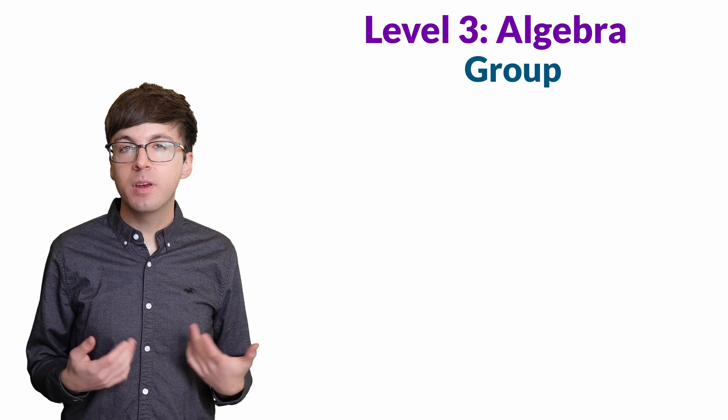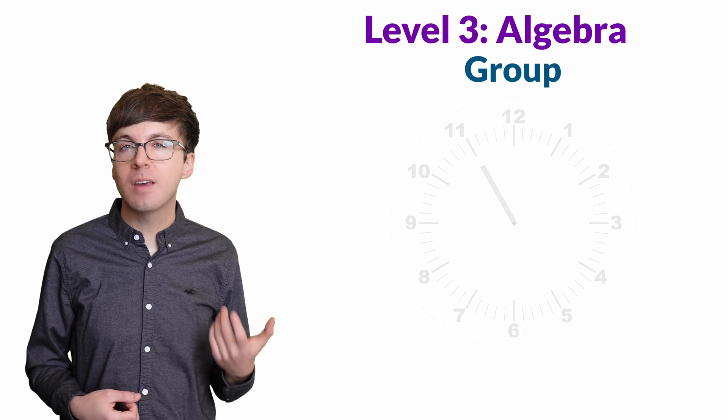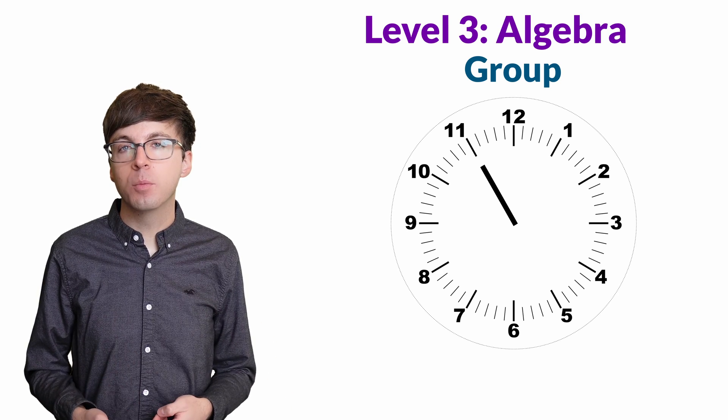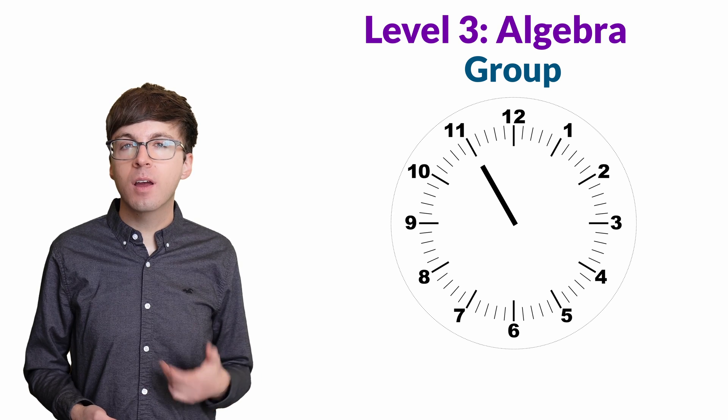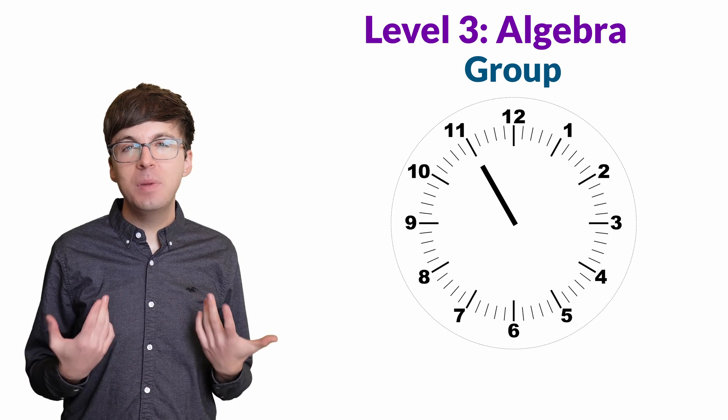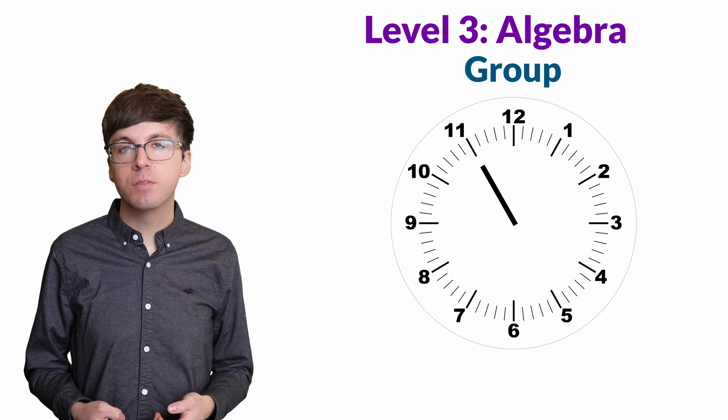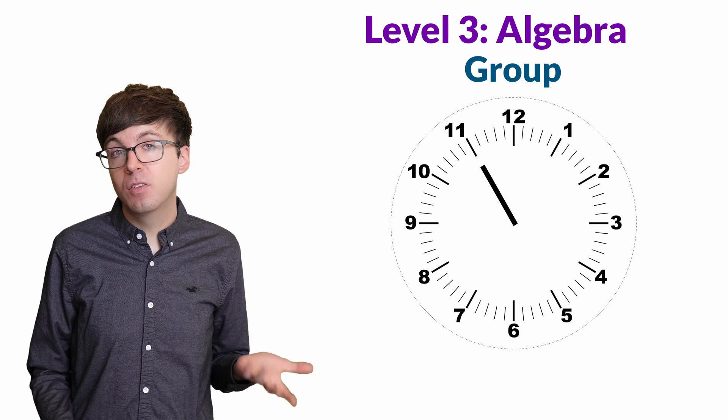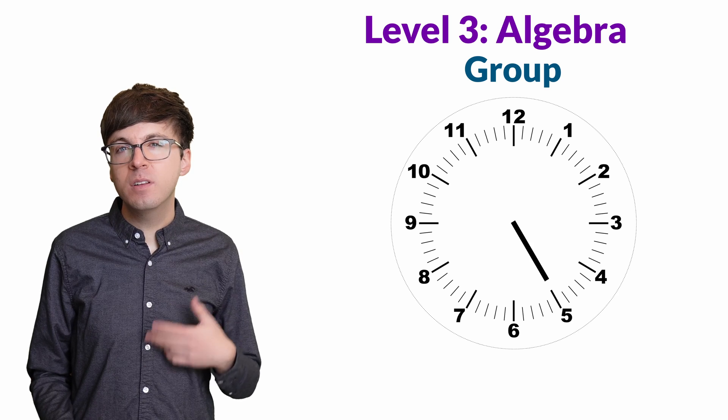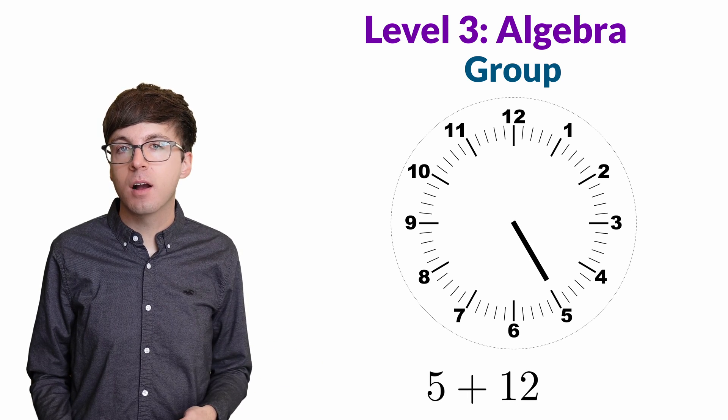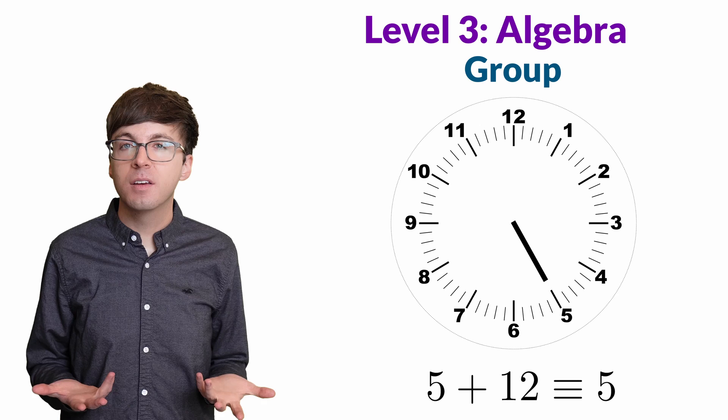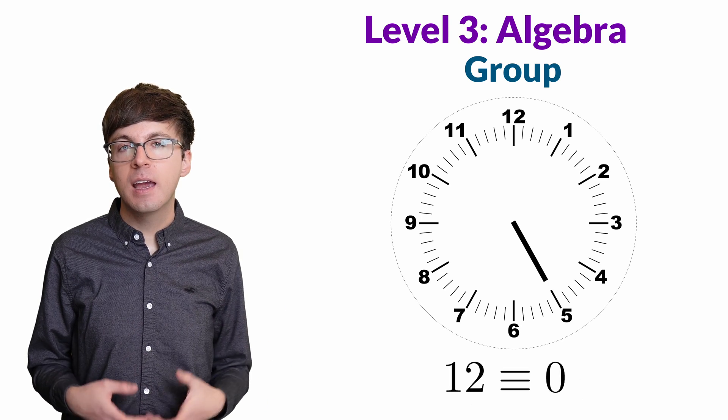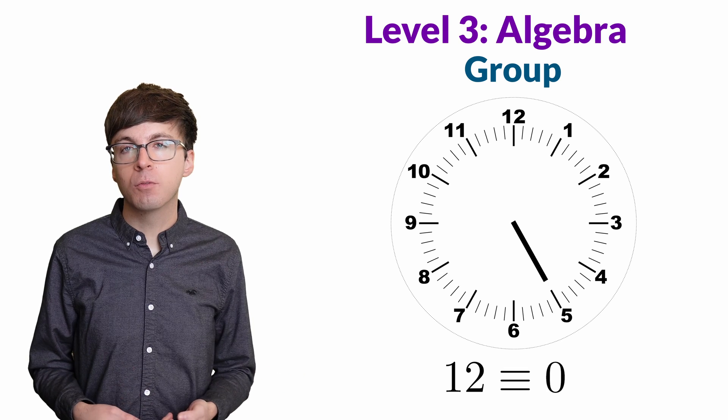A group is an algebraic structure that allows us to add objects from a set. For example, the hours on a clock form a group. If we use 12-hour time like on this clock, it might not be obvious that 0 is involved. But there is an additive identity for 12-hour time. It's 12. For example, what's 12 hours after 5 o'clock? Well, that's still 5 o'clock. So in 12-hour time, 12 is the additive identity, and it's equivalent to 0 in this group.